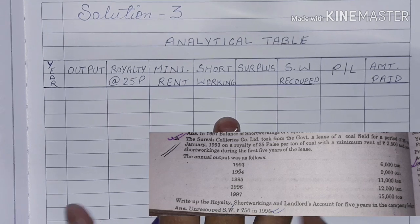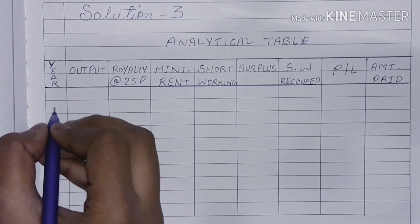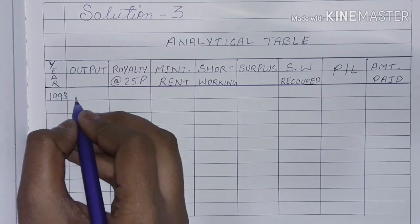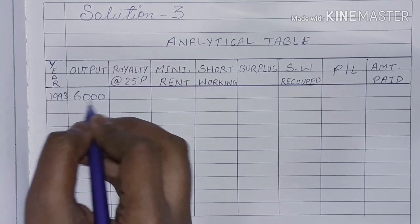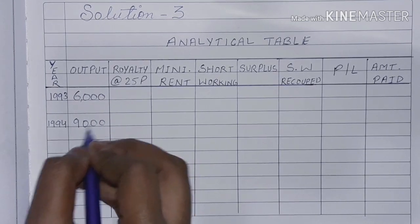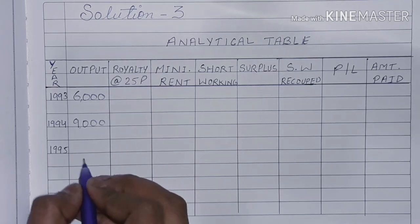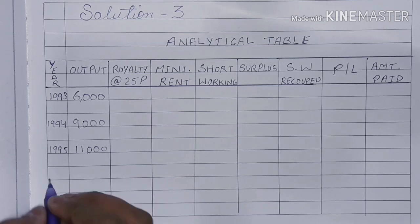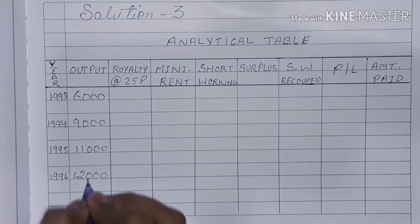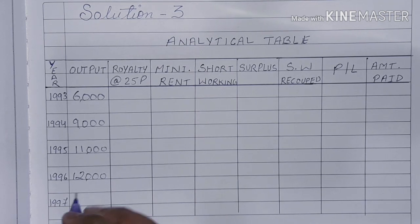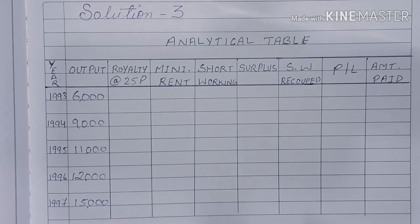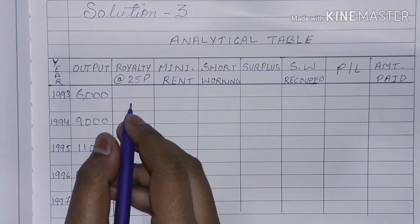Let's start with years from 1993. All output is given in the question. First year (1993) output is 6,000. Then 1994, its output is 9,000. Then 1995, its output is 11,000. Then 1996, its output is 12,000. And then 1997, its output is 15,000. Now we need to take royalty at 25 price, so 6,000 at 25.